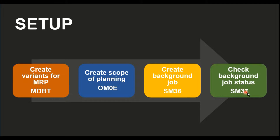To check the status of the background job we use transaction SM37. In the first step of creating the variant for MRP, we have to define the planning parameters needed for the MRP background job to execute in that particular plant. In MDBT we define the creation indicators of the purchase requisitions and the scope of planning. We'll discuss those parameters in more detail when we log into SAP.